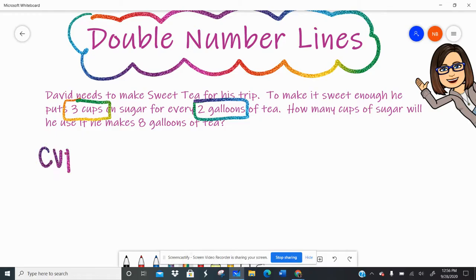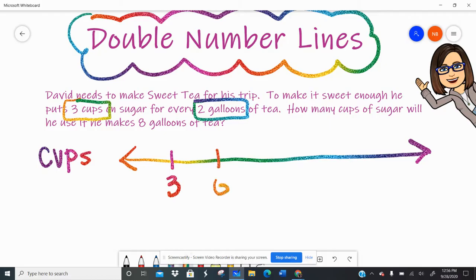So let's start with cups. For this number line, we're going to be counting by threes because it's three cups. So three, six, nine, 12, 15. We'll stop there just in case.